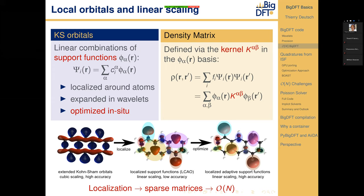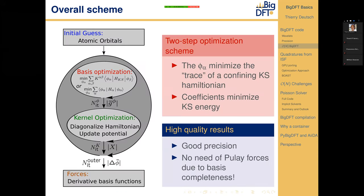The scheme for the linear scaling version is as follows: we start from atomic-type orbitals, optimize our basis set of support functions on our wavelets by minimizing the constrained Kohn-Sham Hamiltonian, then minimize the Kohn-Sham orbitals on this basis set and iterate. This has been shown to give very accurate results compared to the cubic scaling code. Thanks to the construction of these support functions, no Pulay forces need to be considered.